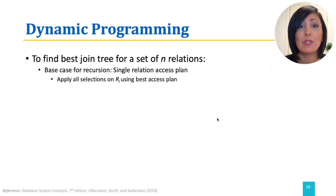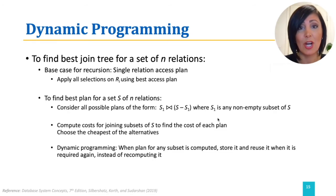To find the best plan for a set of all relations Ri to Rn, we then consider a non-empty subset whose cost is already computed. We then compute costs for all possible combinations for joining those subsets of S to find the cost of the plan, and store the computed cost to be used when it is required again. Ultimately, we choose the cheapest of the considered alternatives among the computed plans.